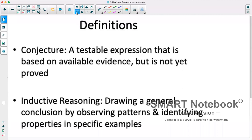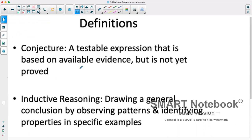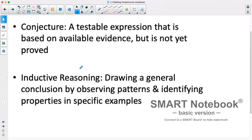So first we'll go through some definitions. A conjecture is a testable expression that is based on available evidence, but it's not yet proven. So with this, we essentially look at some patterns and try to find how that pattern would continue on and predict it, and we can then test it later on to see if it's true.